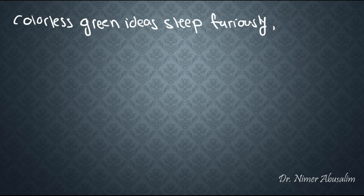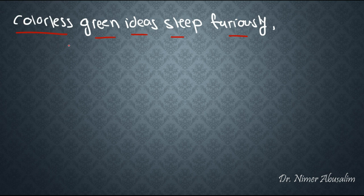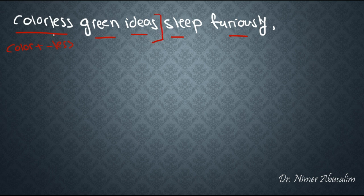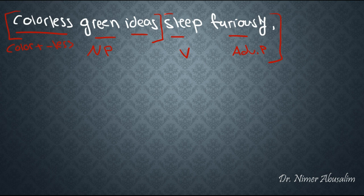Okay: colorless green ideas sleep furiously. Now if you notice, this sentence is made up out of words, and the sentence is actually also made up out of the more primitive parts which are the sounds — the k sound, the l sound. So we have the sounds, we have the syllables, we have the morphemes. For example, color plus -less makes up colorless. So we have the morphemes, then we have the words, and on top of that we have phrases. Colorless green ideas is a noun phrase, sleep is a verb, and furiously is an adverb phrase. All of this is a verb phrase and everything together is the sentence.